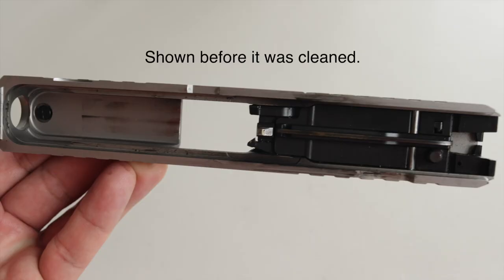Once the slide's clean, put one drop of CLP on the safety plunger, one on the disconnector cut, and one on the stripper rail.